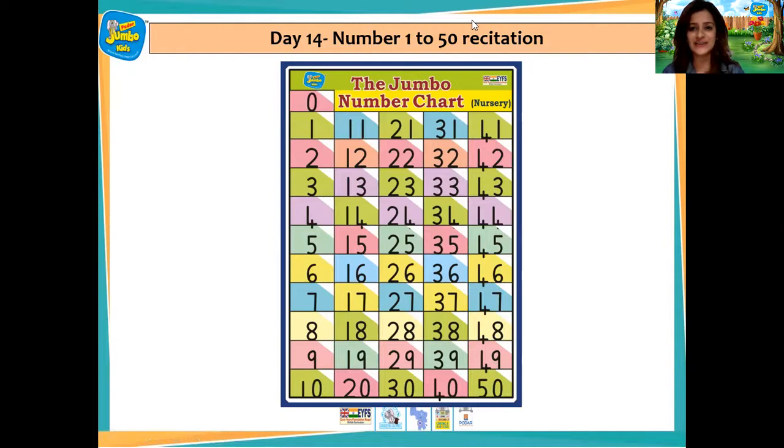Well done children. So this was our number recitation, number 1 till 50. Now we are going to recite numbers again, but we are going to do it in a different way. From 1 to 10, we are going to clap. And then from 21 to 30, I will tell you what to do. So first let's start from 1 to 10.